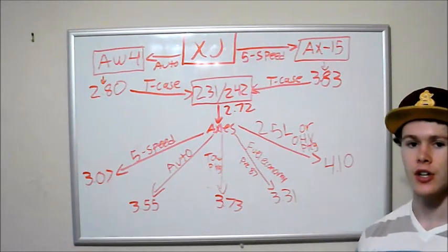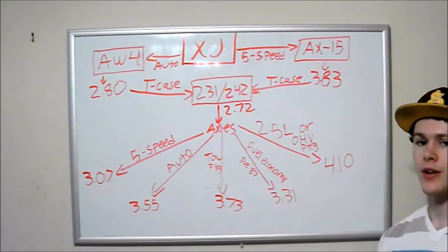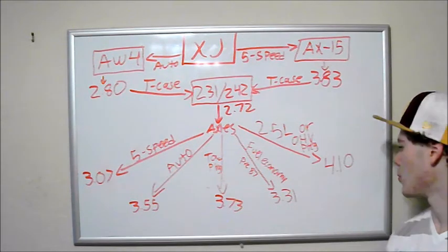If you have a 4 cylinder, a 2.5 liter, or on the older Cherokees, if you have the off-highway vehicle package, you're going to have 4.10 gears, so 4.10.